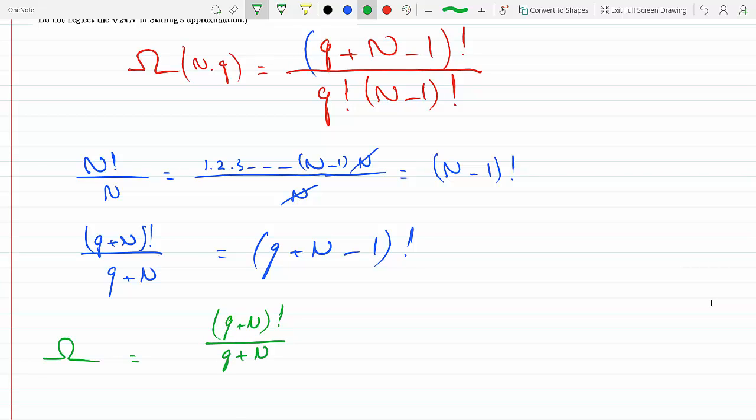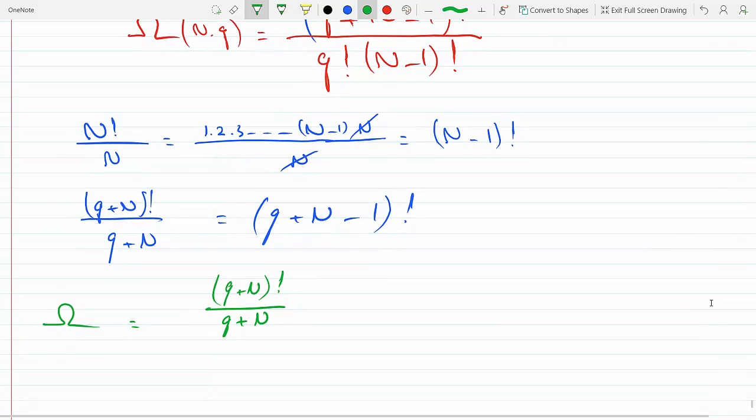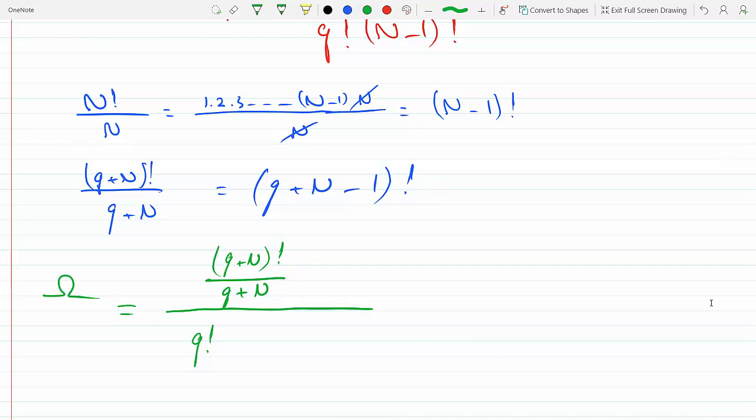Divided by q! and I am replacing (n-1)! with n! over n. So this will become (q+n)! times n divided by q! times n! times (q+n).